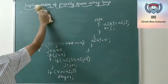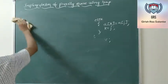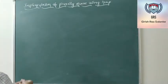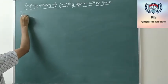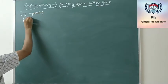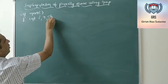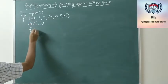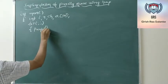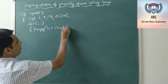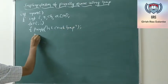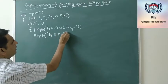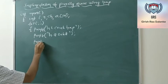In the main function, my variables are n, choice, and an array. I set up a menu with three options: one to create a heap, two to delete, and three to exit.